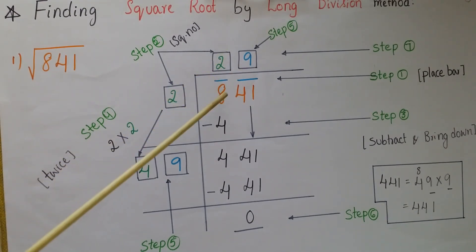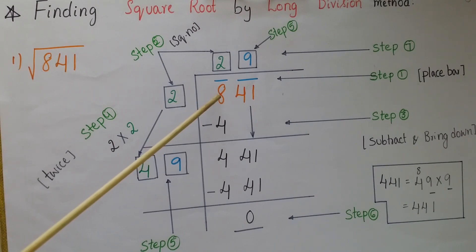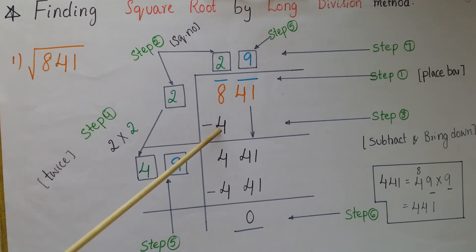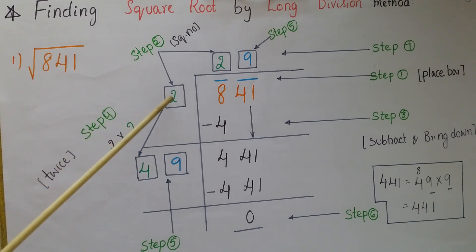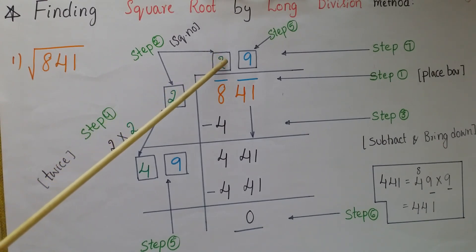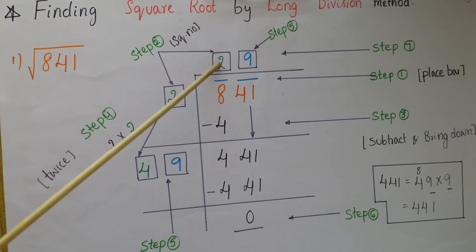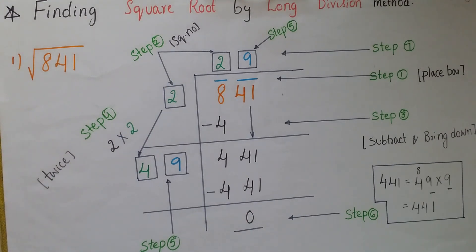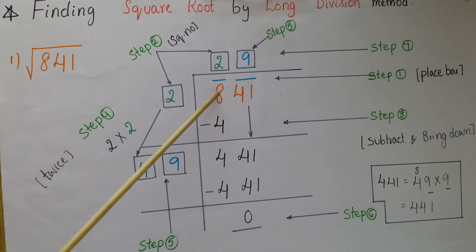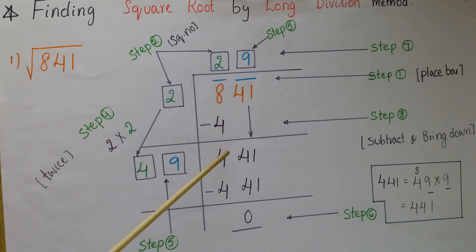In the second step, look under the first bar — there is 8. We need a square number less than or equal to 8. Since 4 is the largest such square number and 4 = 2², write 2 on the divisor place and 2 on the quotient place above the first bar. In the third step, subtract 4 from 8 using normal division.